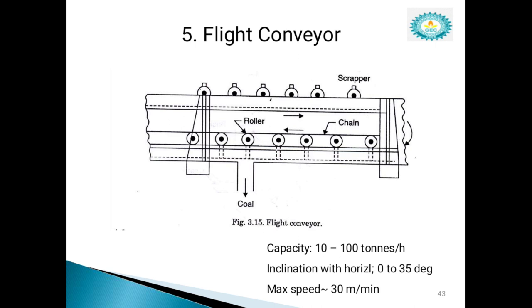And last one is flight conveyor. This conveyor is generally used for transfer of coal when filling of a number of storage bins situated under the conveyor is required. It consists of one or two strands of chains to which steel scrapers are attached. The scraper scrapes the coal through a trough and the coal is discharged at the bottom of the trough as shown in figure. The capacity is 10 to 100 tons per hour and inclination with horizontal angle is 0 to 35 degrees. The maximum speed is 30 meters per minute. These are the equipment used in coal handling process.